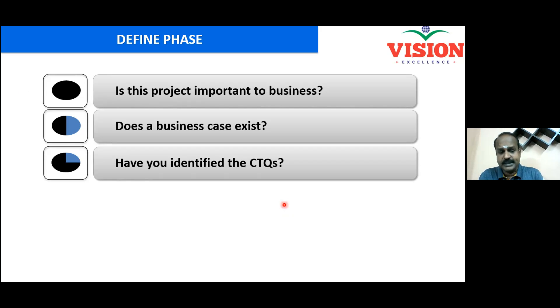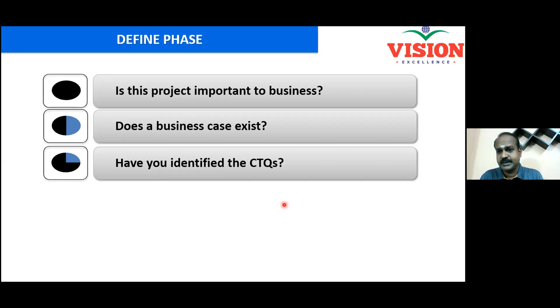Always identify measurable characteristics that will truly reflect the pain experienced by your customer. Those are called CTQs. It could be dimension, hardness, or any metric which can represent your customer's problem.